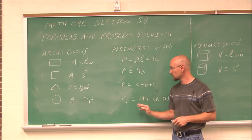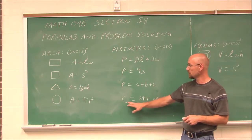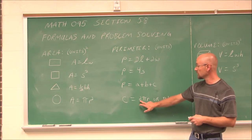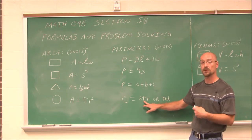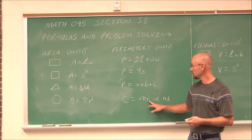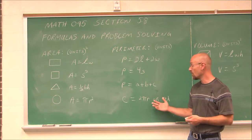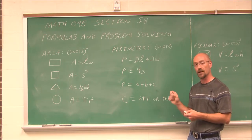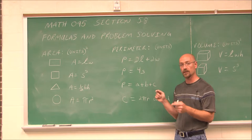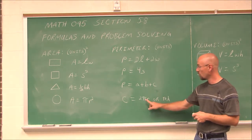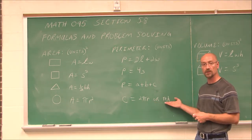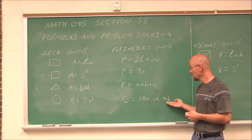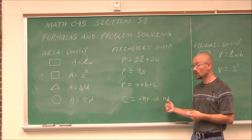Circumference is a little different. To find the circumference — the distance around a circle — it is two times pi times the radius, or equivalently pi times the diameter. The radius goes from the center to an edge, while the diameter goes all the way across through the center — it's twice the radius. These two formulas are equivalent, so we use whichever one matches the information we're given.